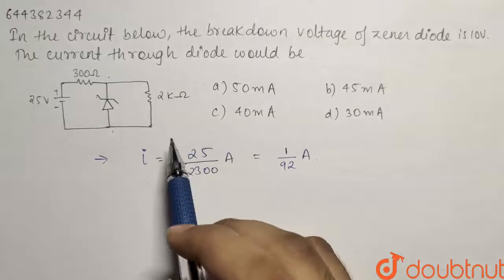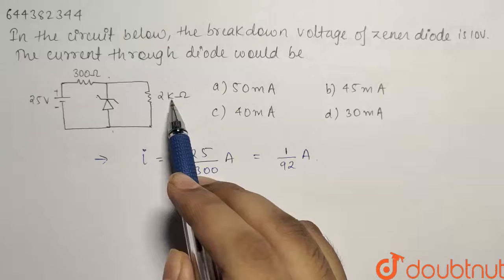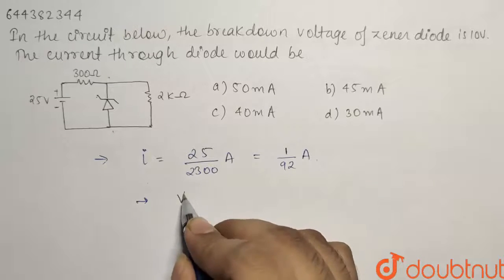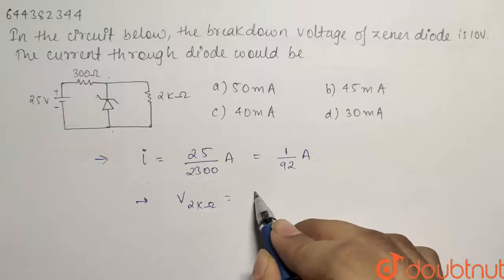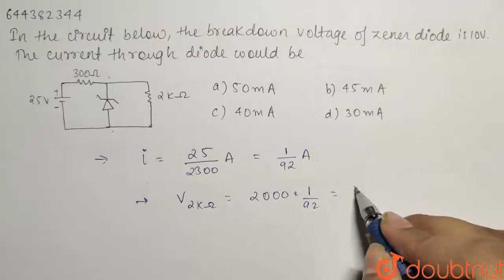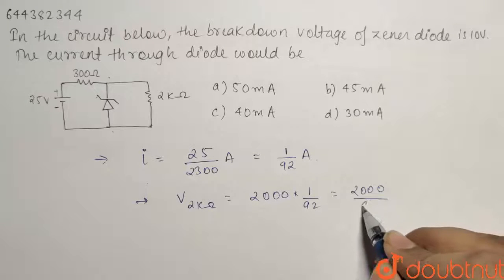So now let us find out the potential difference across this 2 kilohm resistance due to this current I. So the potential across the 2 kilohm will be equals to 2000 multiplied by 1 by 92. So it will become 2000 divided by 92.